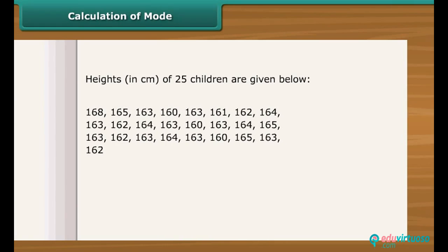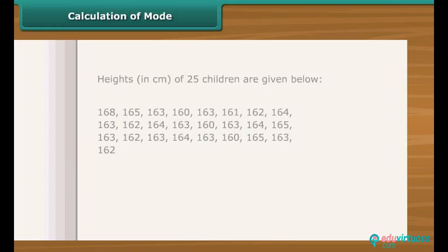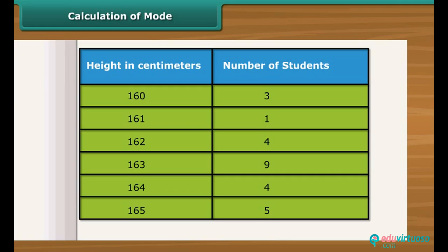Look at this data — it shows the height of 25 children in a class. Let us find out the mode of their heights. First, put the numbers in order and put it in a tabular form. Then, count how many of each number. 163 appears nine times, so the mode of the children's height is 163.